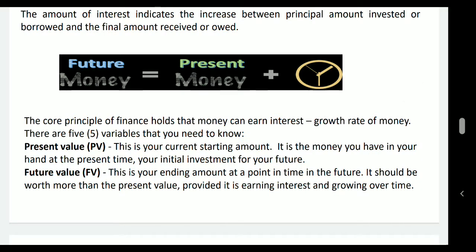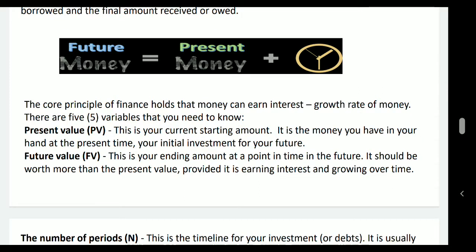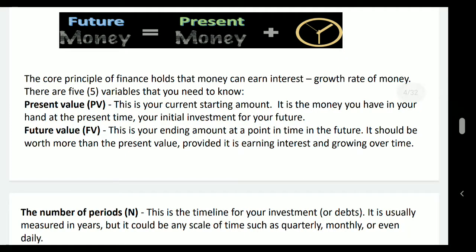Future money is equal to present money plus time. If you add the time value to the present value, you will get the future money. The core principle of finance holds that money can earn interest. The growth rate of interest is the rate at which money will increase. There are five variables you need to know to understand time value of money. One is present value — your current starting amount, the money you have in hand at the present time, your initial investment for the future.